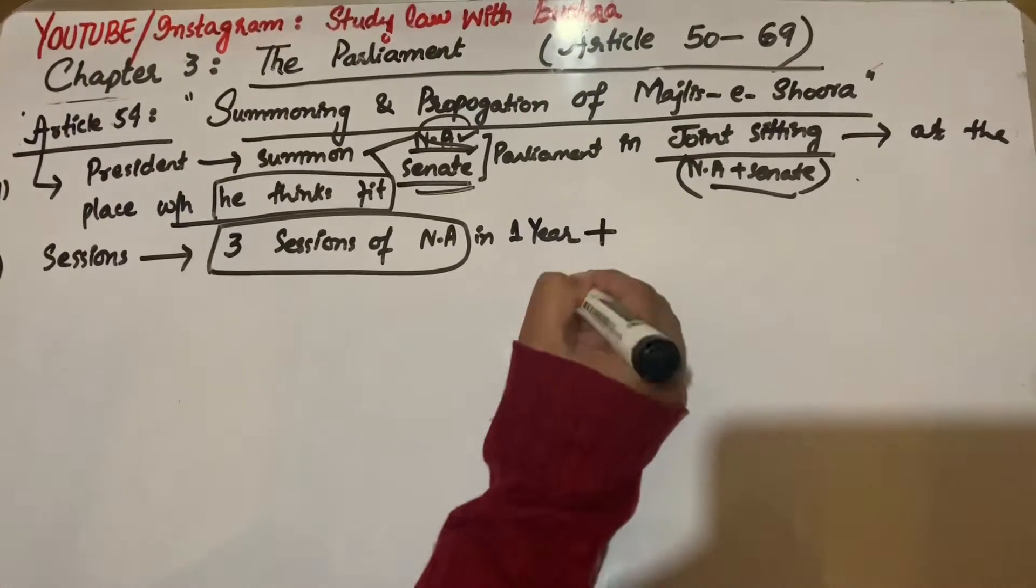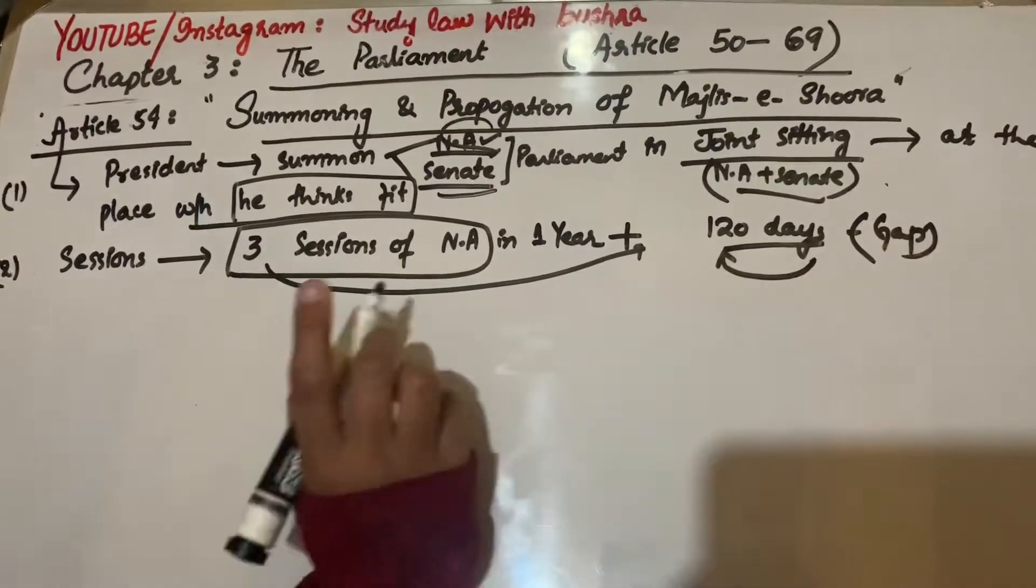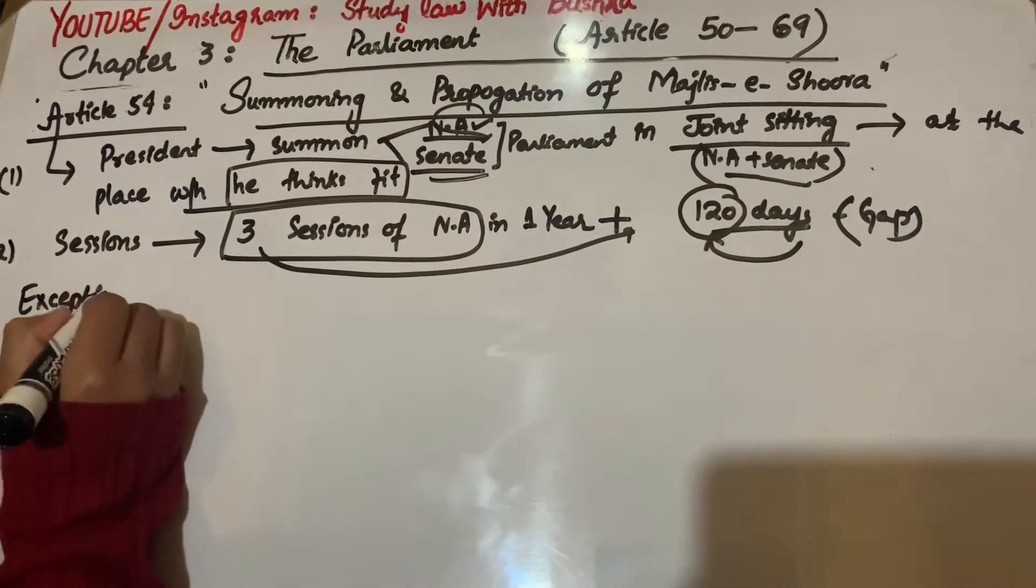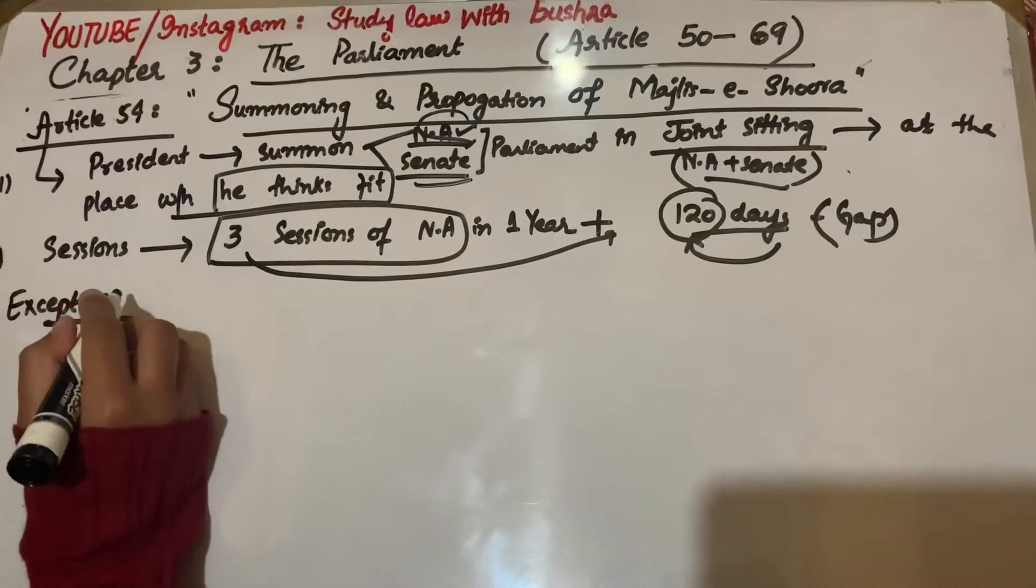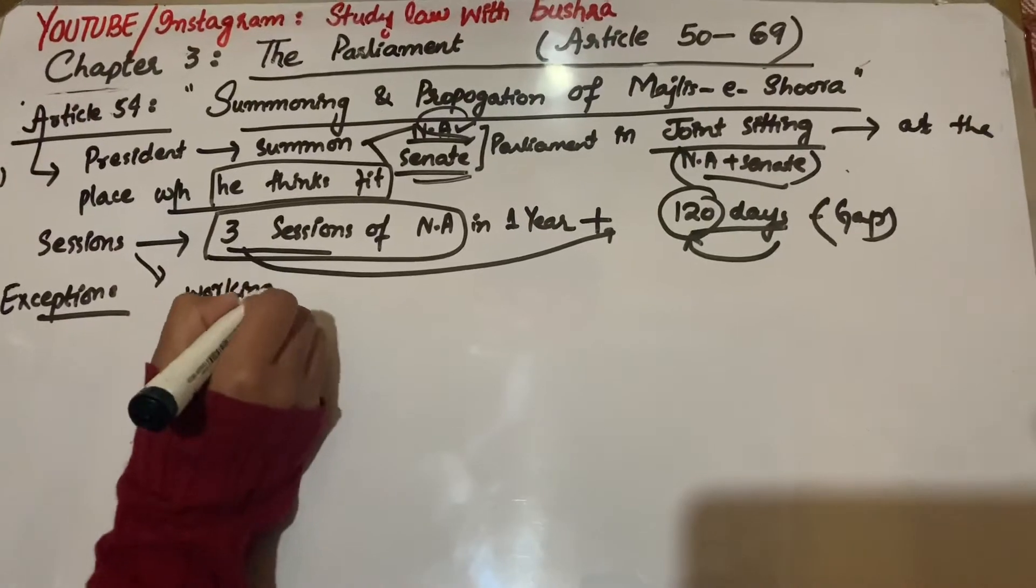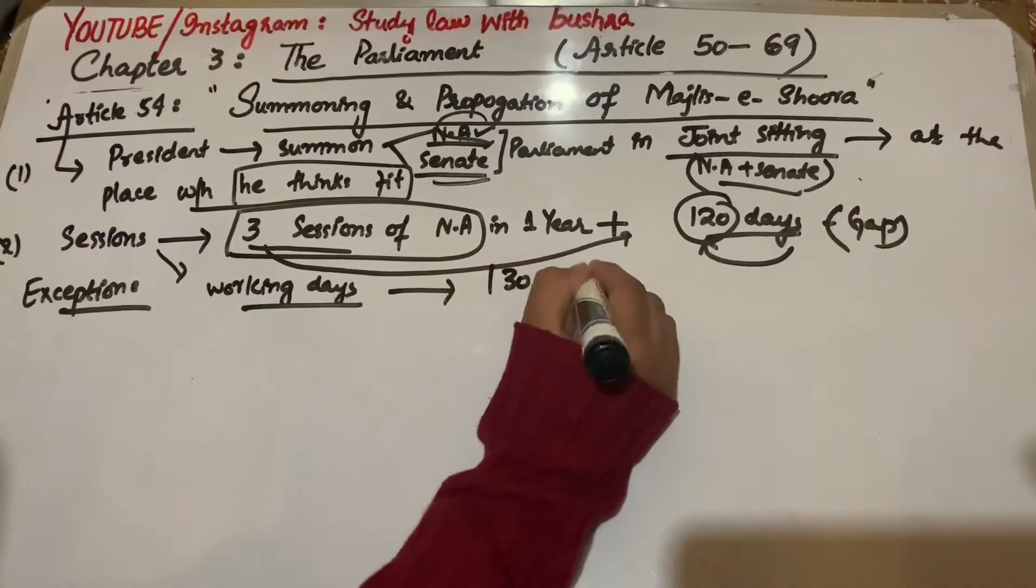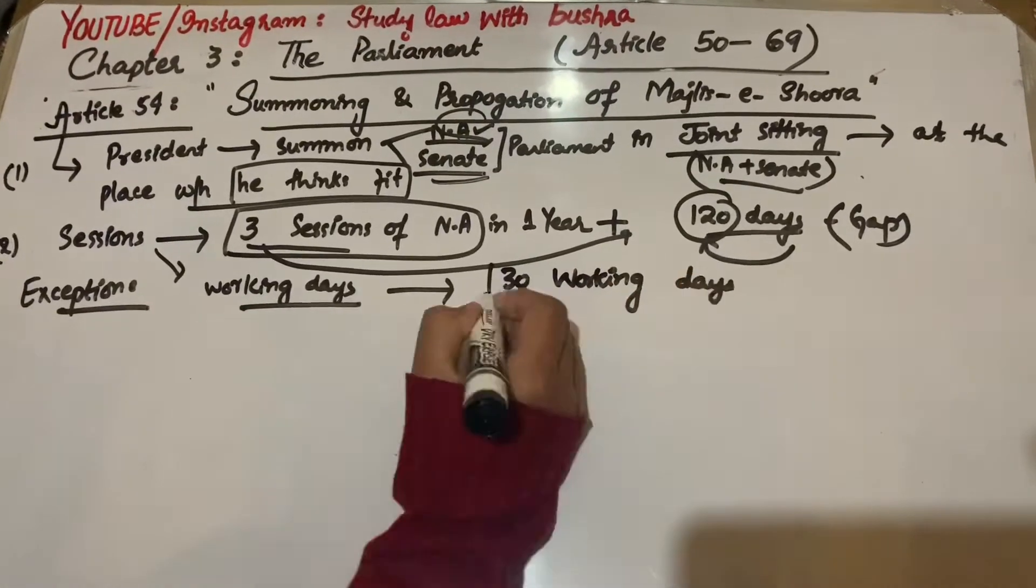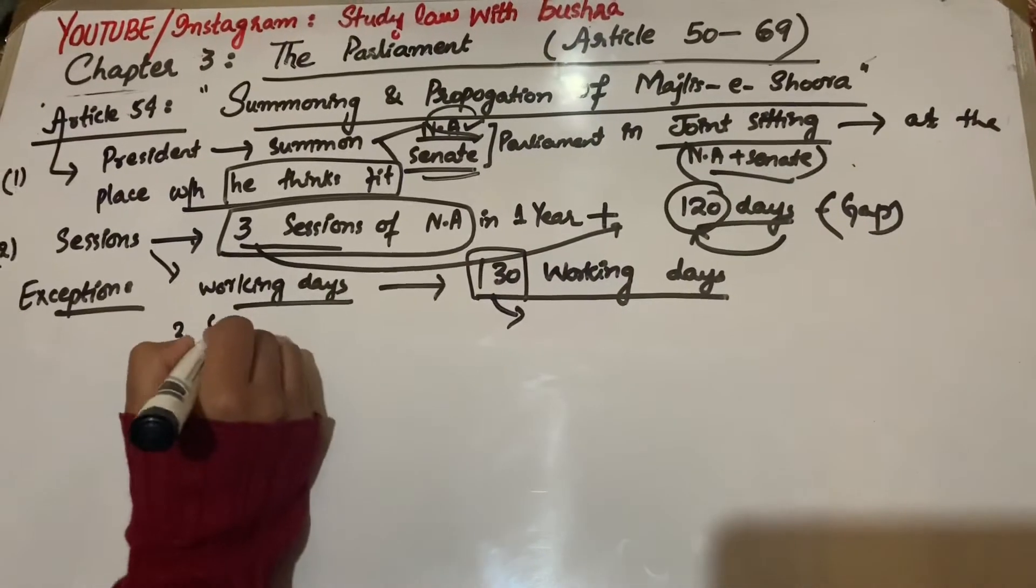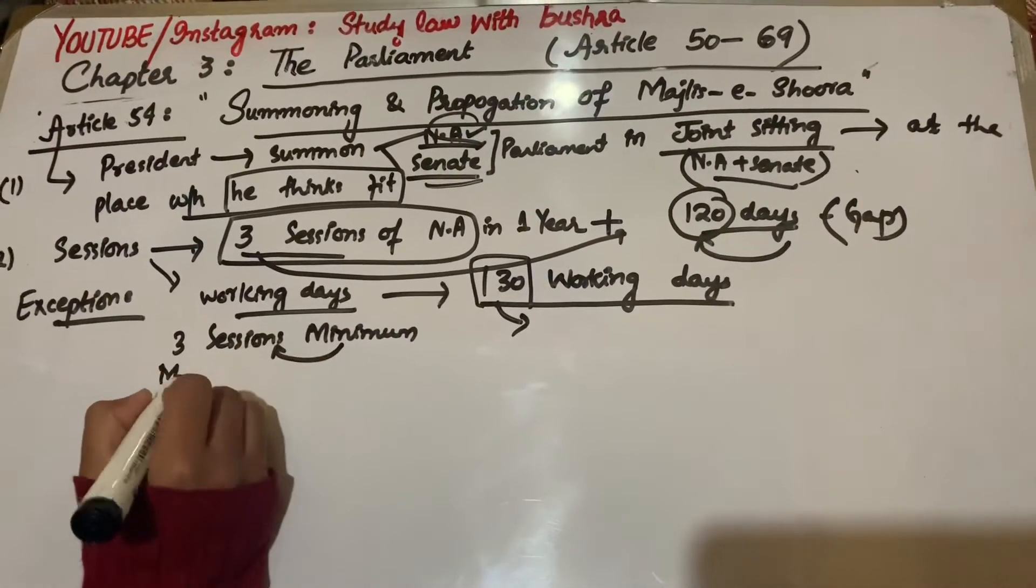Clause 2 says that at least three sessions of National Assembly should be held every year, and 120 days difference should come between these three sessions. An exception is given: the National Assembly should work minimum 130 working days within every year.